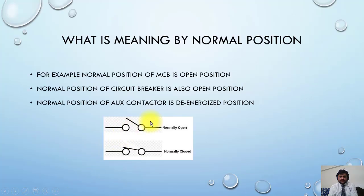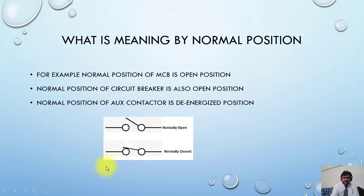For example, the normal position of an MCB is the open position. The drawing shows that the MCB has two positions: one is open position and one is closed position. As per the drawing, the open position of the MCB is the normal position. It means if the MCB is open, this contact will be open.